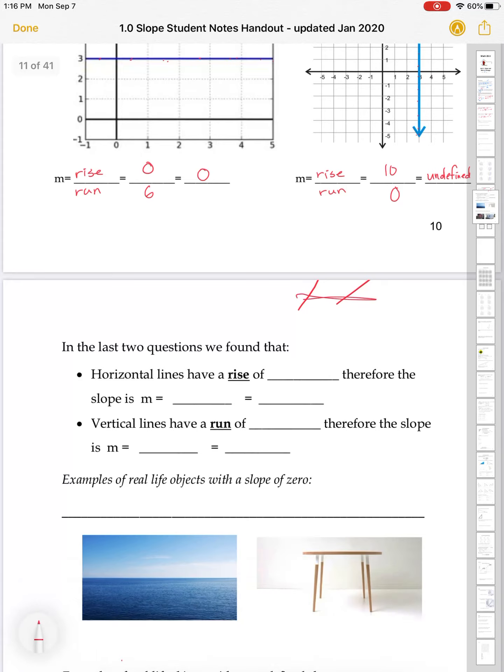So let's summarize some of this. In the last two questions, we found that horizontal lines have a rise of 0, and therefore the slope is, it's going to be 0 over run, or 0. Vertical lines have a run of 0. Therefore, the slope is going to be rise over 0, or undefined.